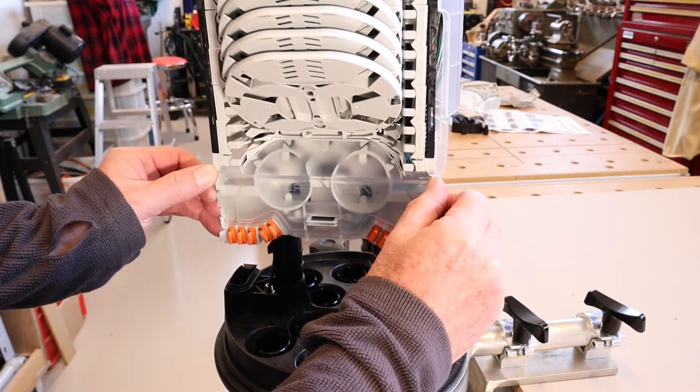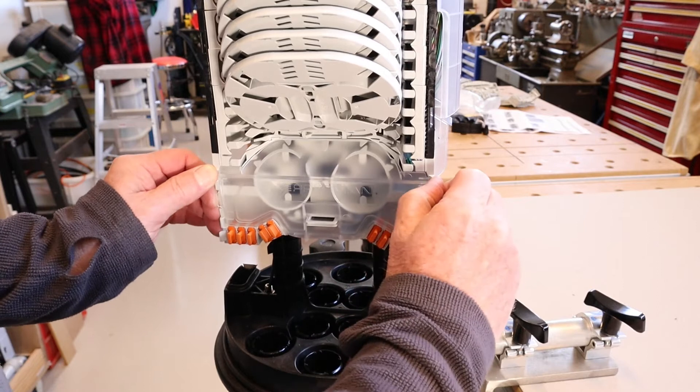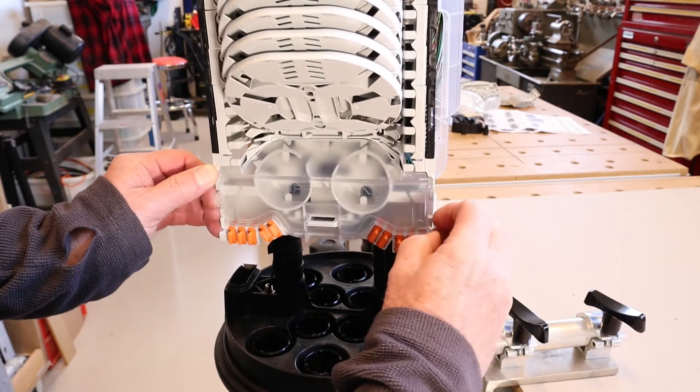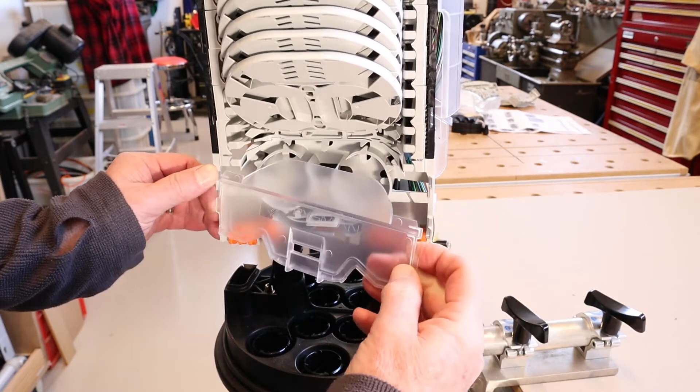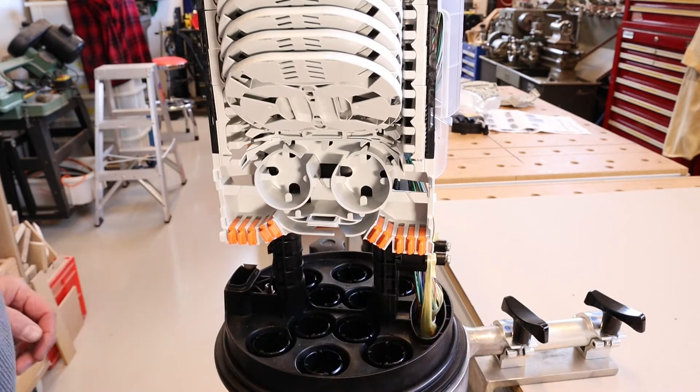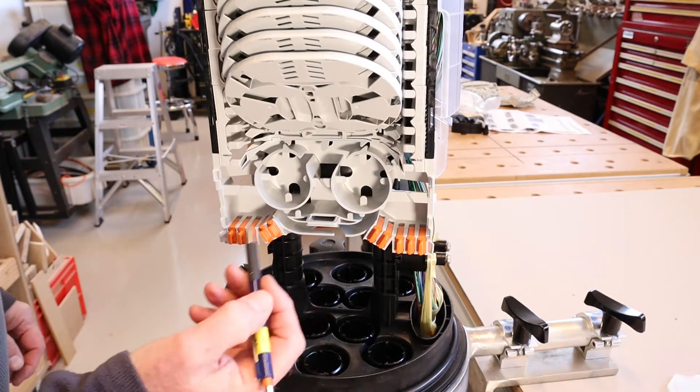Then pushing the tab out with your fingers and then it comes away and that reveals the distribution manifold.